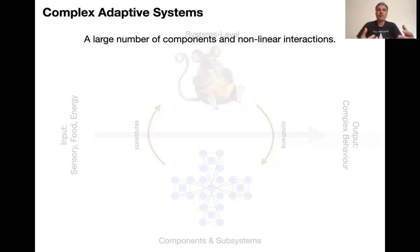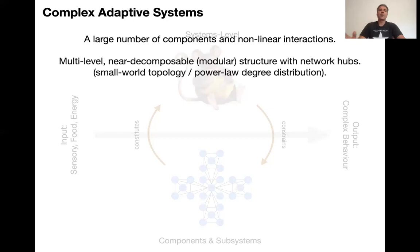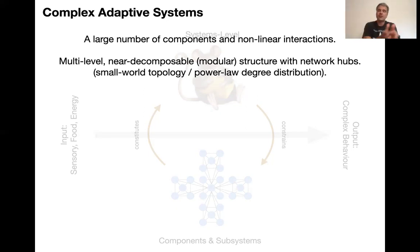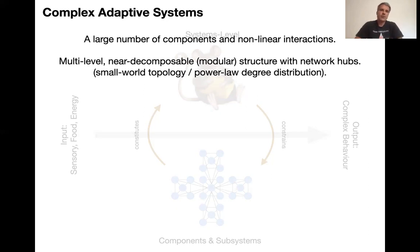A complex adaptive system has a large number of components, and they have to interact in non-linear ways, because linear systems are always predictable and aggregative. The structure of the system has to be multilevel — it's hierarchical. A mouse is made out of tissues, which are made out of cells, organs, tissues, cells. The cells are made out of biochemical macromolecules, genes, proteins, and so on, which are made out of molecules and atoms. So we have a multilevel structure, and that structure is near decomposable.